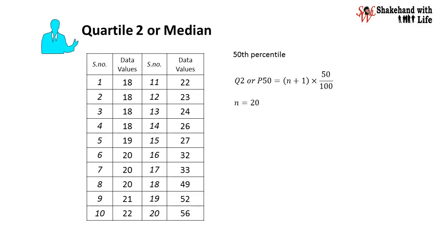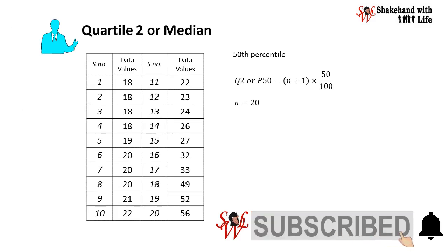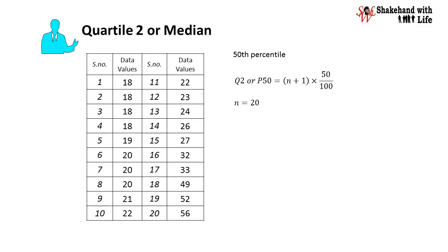Now we will find the second quartile, or the median of the data set. The second quartile is the 50th percentile, so Q2 or P50 = (n + 1) × 50 / 100. With n = 20: 21 × 0.50 = 10.50. Hence the median is the data value at position 10.50, which is 22.